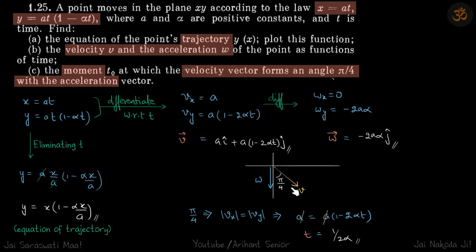So obviously the x component divided by y component of velocity that they are equal that's why it is π by 4. So that's what we will do π by 4 means mod of vx is equal to mod of vy.